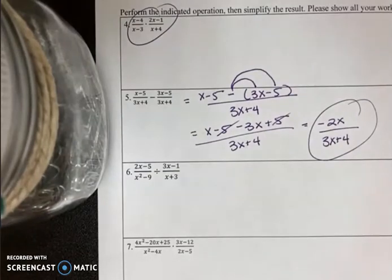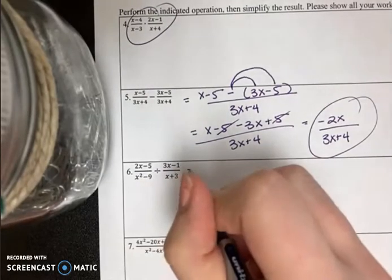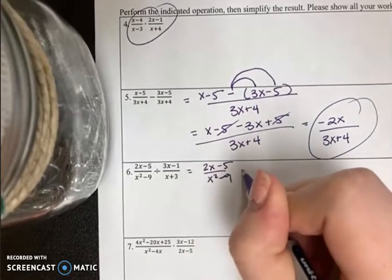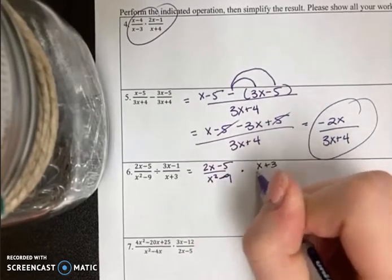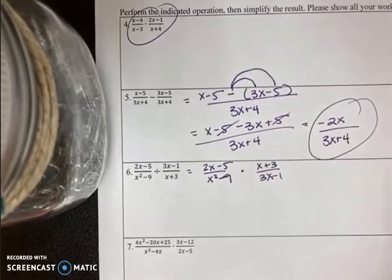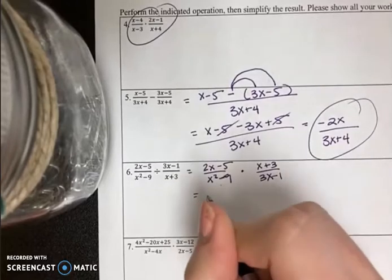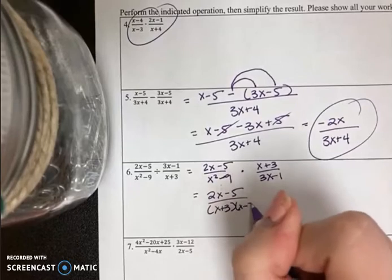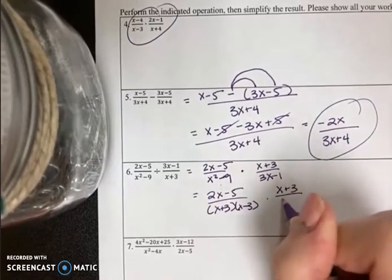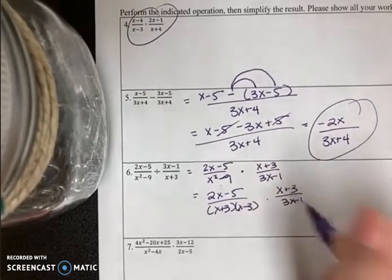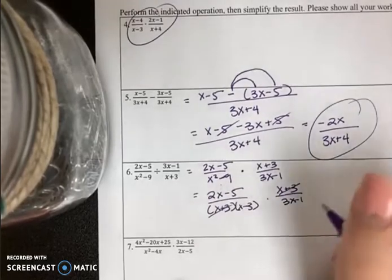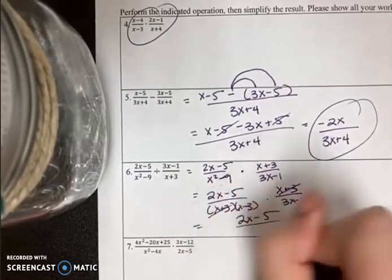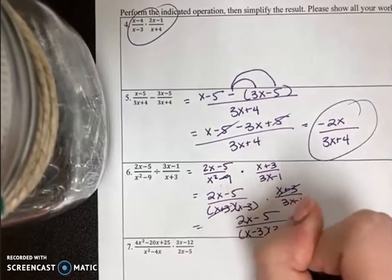Number 6 is a keep-change-flip problem. So we need to keep the first term, change from division to multiplication and flip the second. The only one that can really factor any further is this one. It's a difference of two squares. So the x plus 3s cancel. And I am left with 2x minus 5 over x minus 3, 3x minus 1.